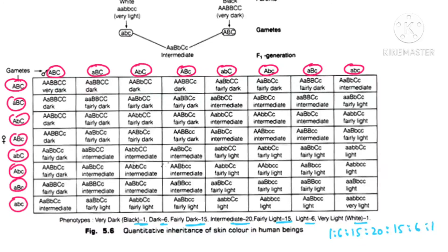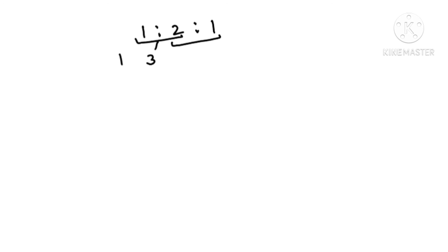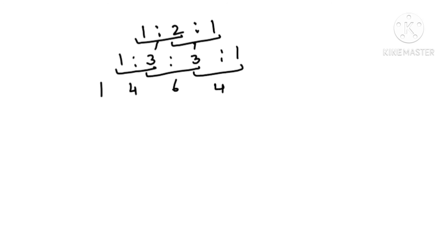Let me explain the trick for solving such questions. Whenever you need to find the phenotype ratio for a character controlled by 2 or 3 genes, use this method. Start with 1:2:1 — the monohybrid ratio. Keep 1 at the start, add adjacent numbers, keep 1 at the end: you get 1:3:3:1. Do it again and you get 1:4:6:4:1 — for a character controlled by two genes.